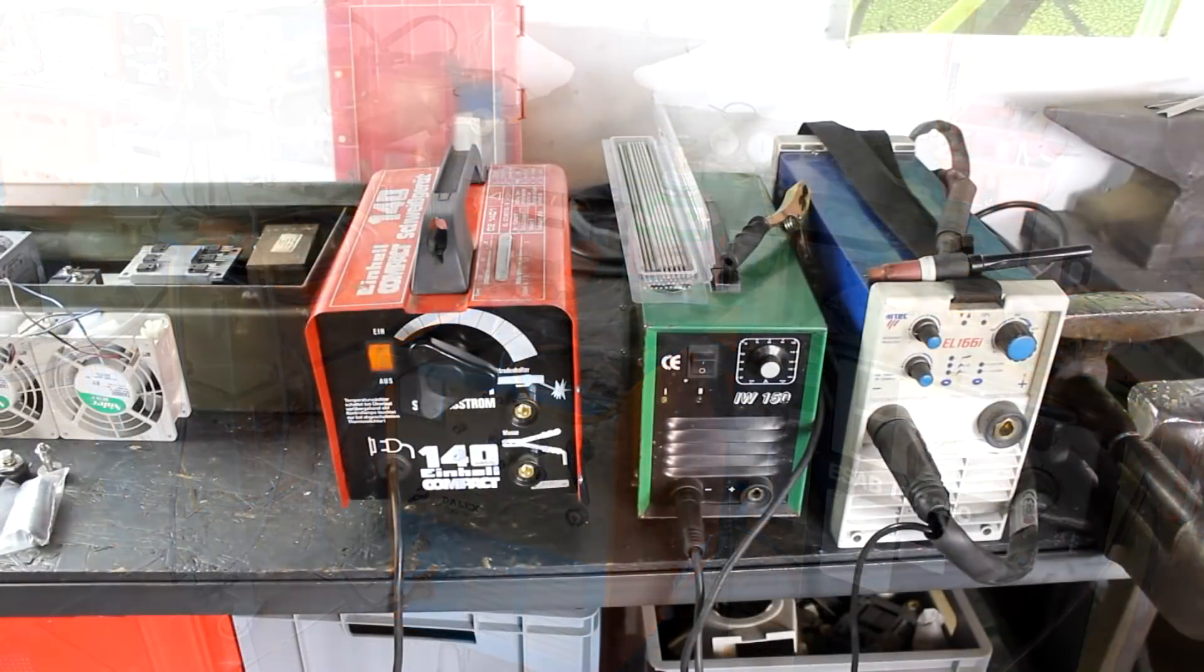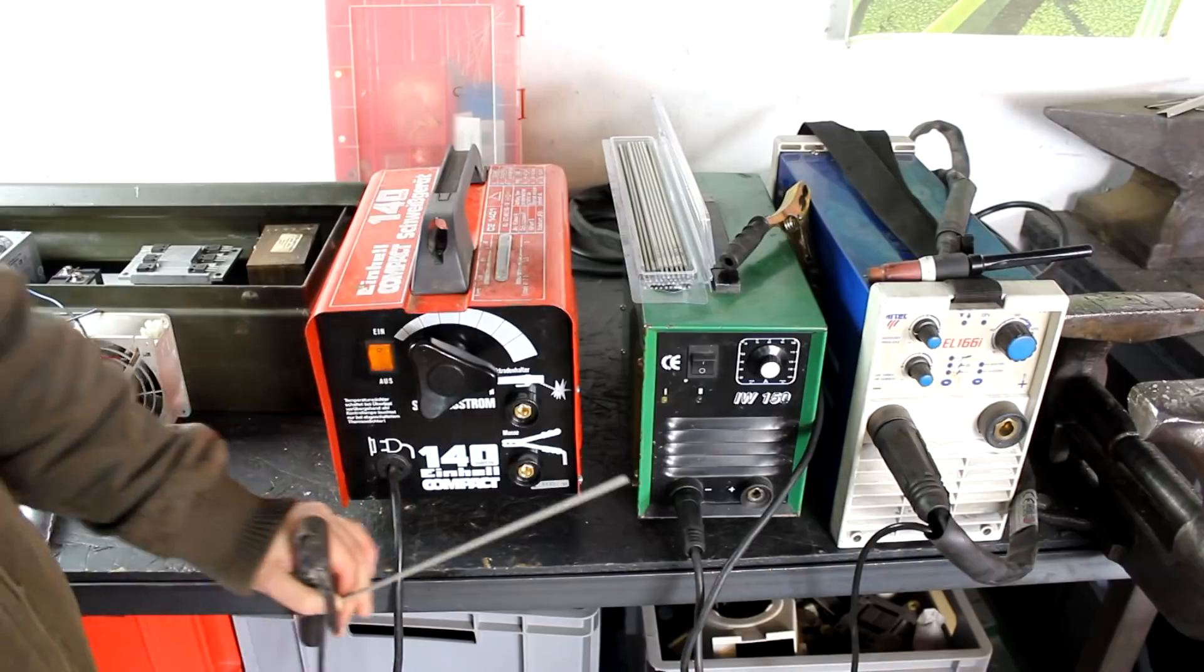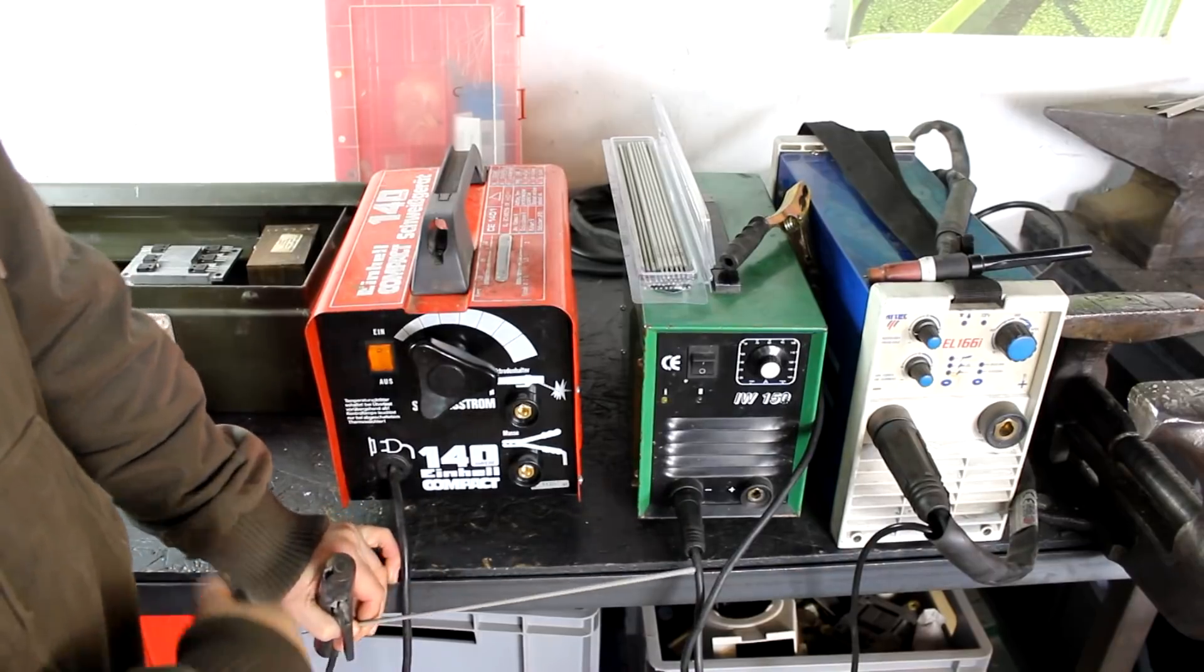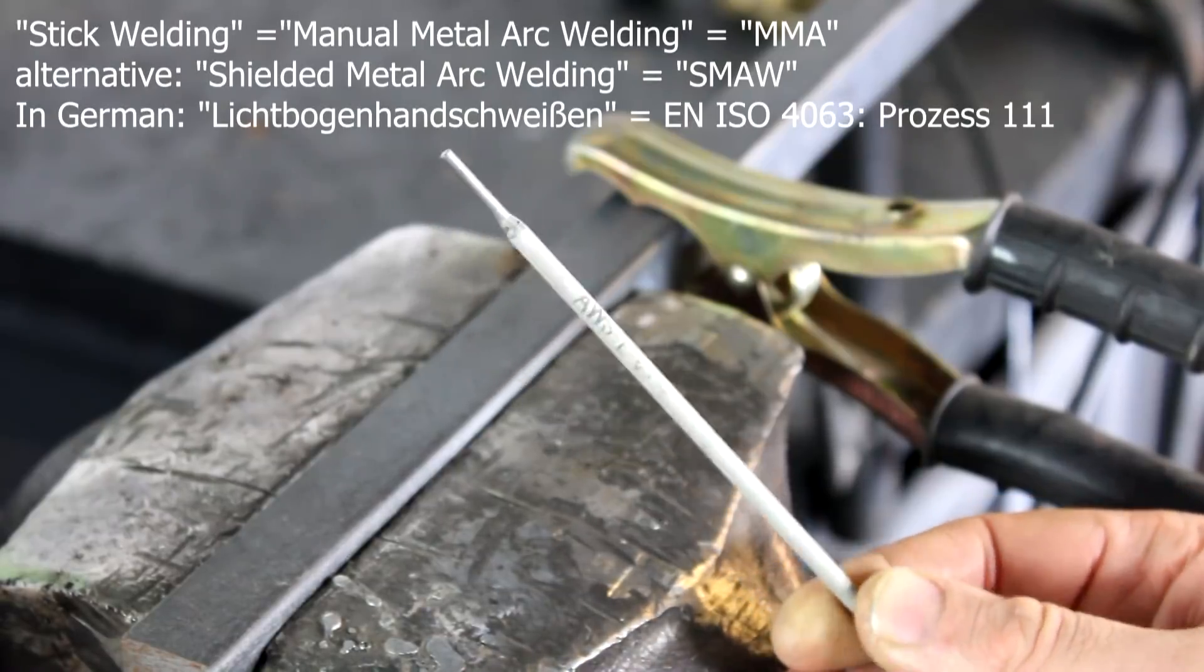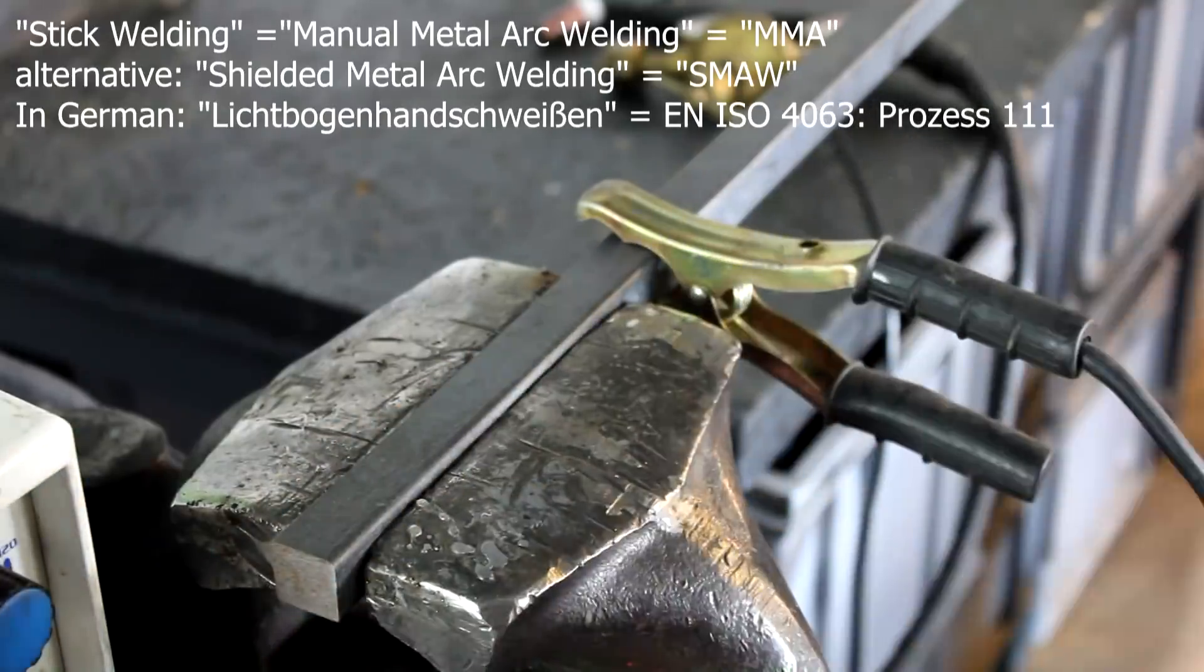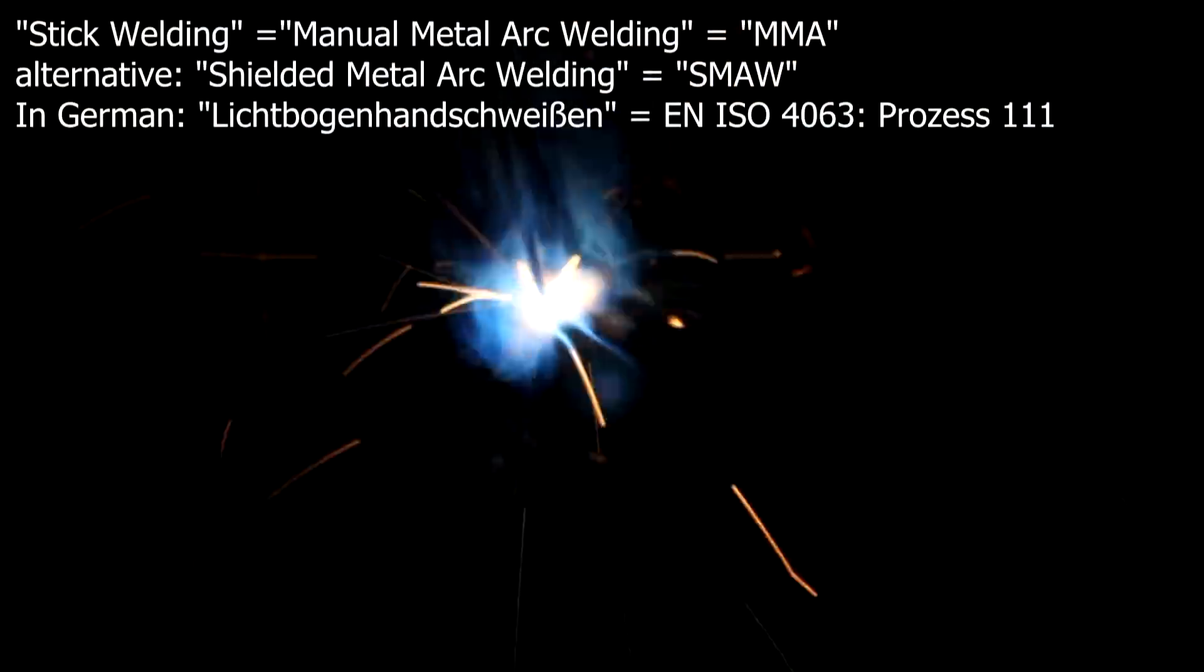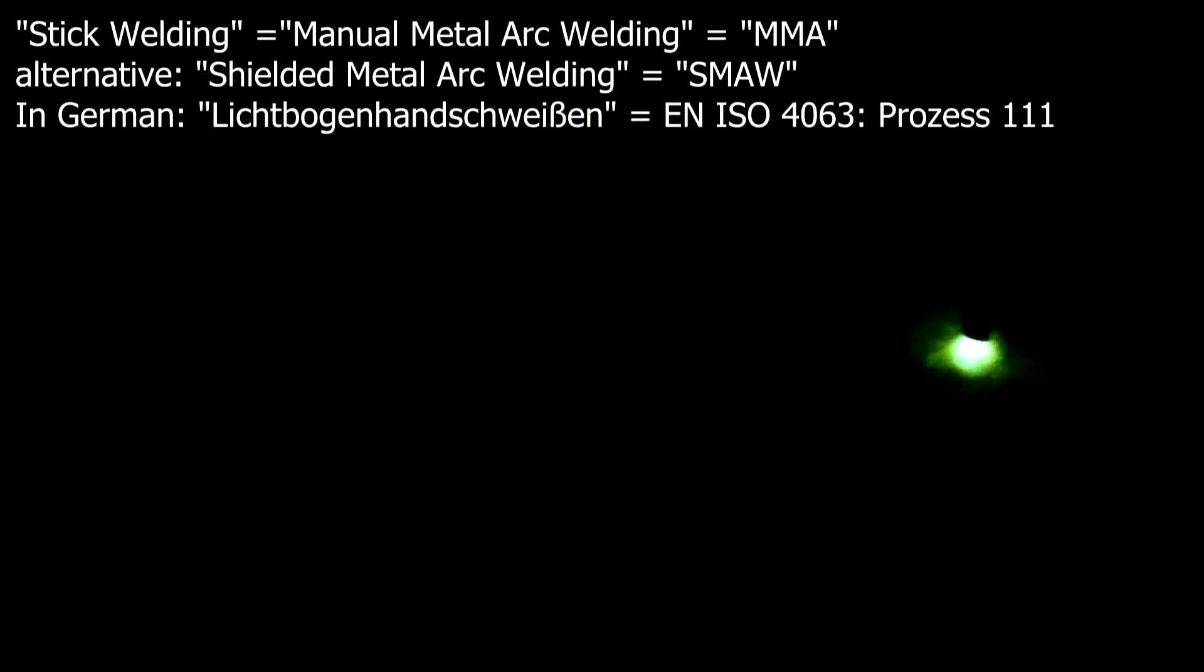The most basic difference between the three different welding processes that we have named here so far? Well, stick welding or manual metal arc welding is done with an electrode holder and a welding electrode. You strike an arc on a workpiece that is connected via a ground clamp to your power supply and that can be done with AC or DC. Stick welding is often used on construction sites or outside because you don't have to carry a gas cylinder around with you.